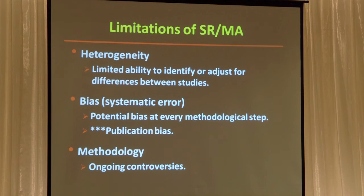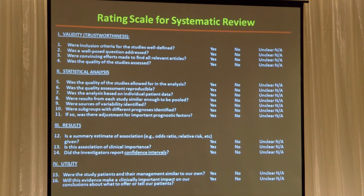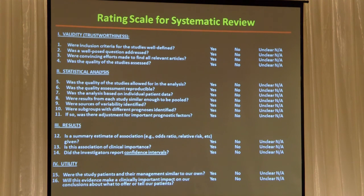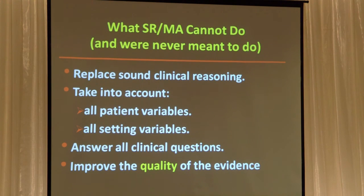Systematic reviews and meta-analyses have some particular risks of bias that aren't relevant to single studies — specifically publication bias and heterogeneity. And like single trials where we use CONSORT, there are a whole bunch of published, easy-to-access ways to both evaluate meta-analyses and produce your own — both the strategy for getting the data and the quantitative aspects. PRISMA is an example.